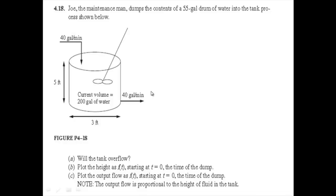This is an example of a steady flow process. The vertical dimension of the tank is equal to 5 feet, and the diameter of the tank is equal to 3 feet. The questions are: Will the tank overflow? Plot the height as f(t) starting at t=0, the time of the dump, as well as plot the output flow as f(t) starting at t=0, the time of the dump.